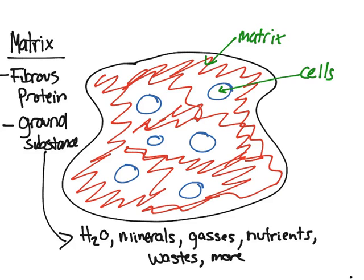That pretty much sums up the overview of tissues. To recap: a tissue is a group of similar cells and cell products that come from the same region of the embryo and work together to perform a specific role. The four tissue types — epithelial, connective, nervous, and muscular — differ in the types and functions of their cells, what the matrix is made of, and the amount of space occupied by cells versus the matrix.